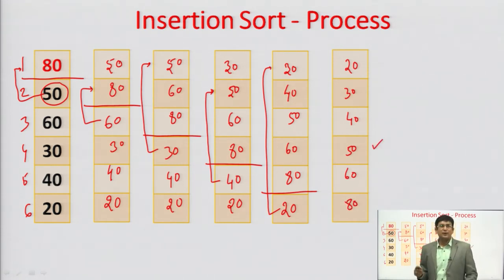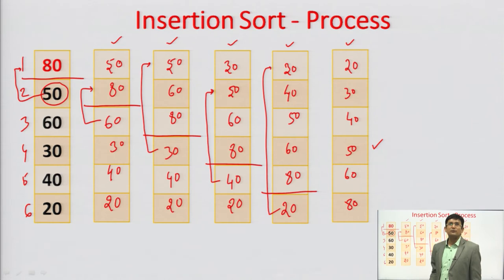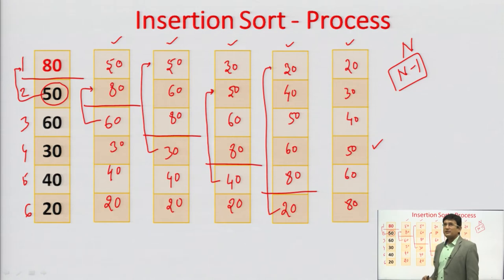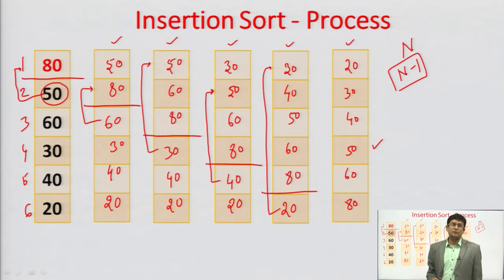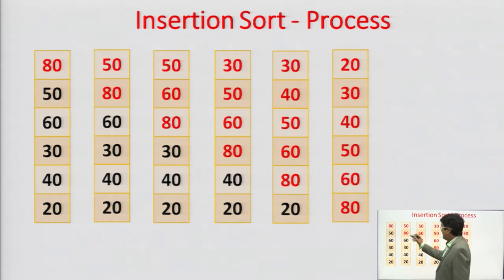We performed 1, 2, 3, 4, and 5 insertions for 6 elements. In general, if we have n elements, we perform n−1 insertions. If every insertion takes one iteration, the total number of iterations is n−1. The size of the sorted array grows by 1 in each iteration.